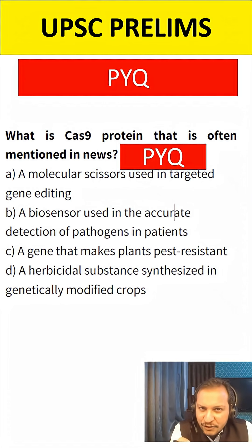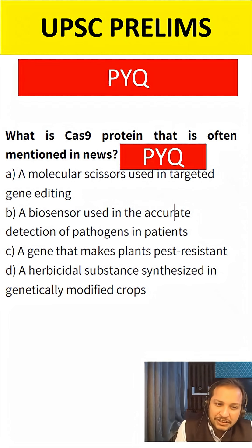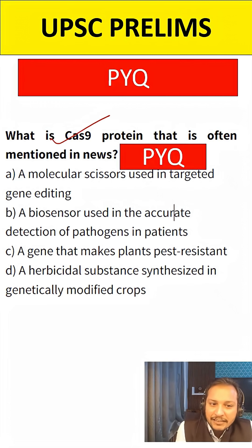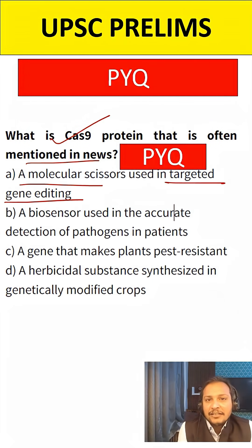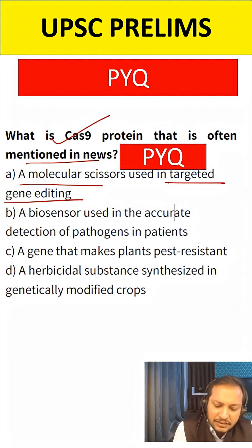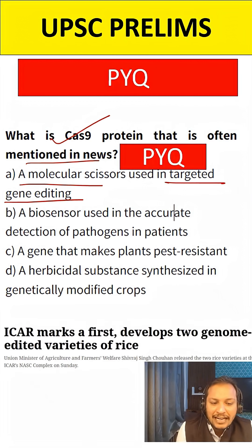If there is one PYQ which is important for UPSC Prelims 2026, this is it. What is CAS9 protein that is often mentioned in news? It is basically a molecular scissor used for targeted gene editing. This PYQ is important for 2026 Prelims because of a very significant recent development.